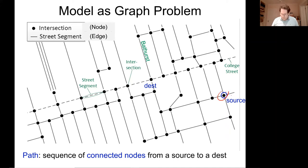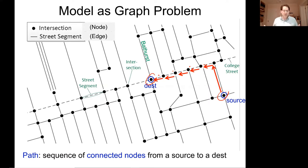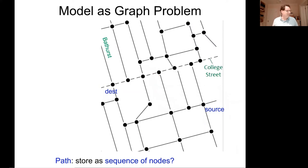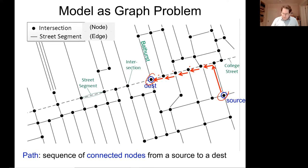We're going to start at a certain node — the source — and go to a destination node. What we're looking for is a path, which is a sequence of connected nodes from source to destination. Our input will be two intersection IDs (source and destination) plus a turn time penalty — how much it costs in seconds to make a turn.